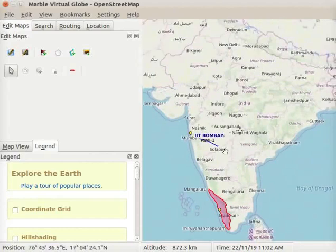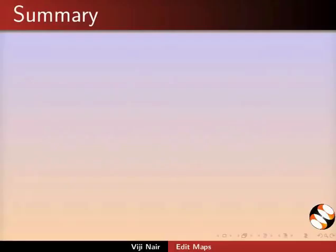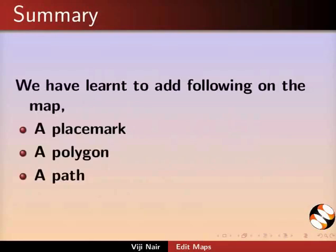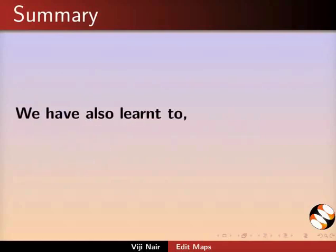We will learn more about edit maps in the upcoming tutorials. Let us summarize. In this tutorial, we have learnt to add the following on the map: a placemark, a polygon, and a path. We have also learnt to save an annotation file.